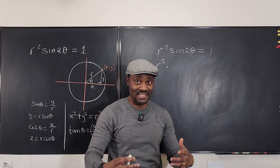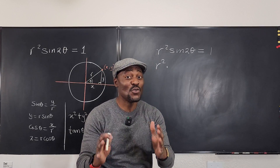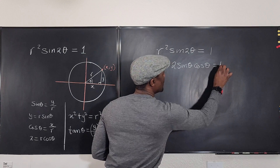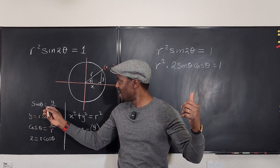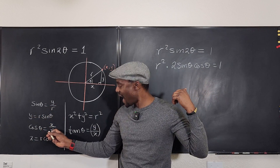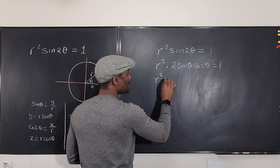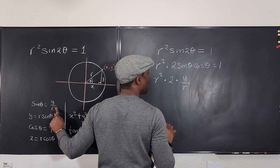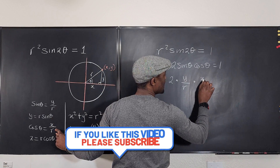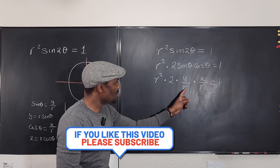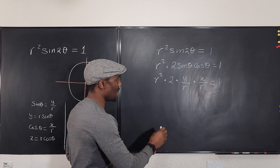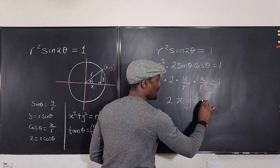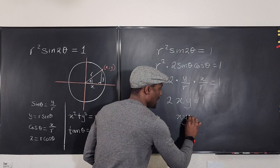Sine 2 theta equals 2 sine theta cosine theta, so we write: r squared times 2 sine theta cosine theta equals 1. Now sine theta is y over r and cosine theta is x over r. Substituting: r squared times 2 times (y over r) times (x over r) equals 1. The two r's cancel with r squared, leaving 2xy equals 1, or xy equals one half. That is the rectangular form of the equation that was written in polar form.